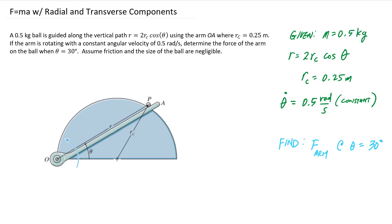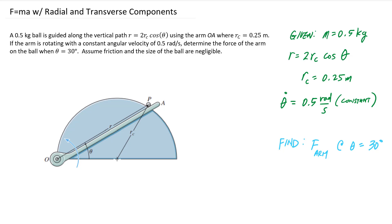We're told that theta-dot, the angular velocity, is 0.5 radians per second and is constant. One thing we want to recognize is that if our angular velocity is constant, then our angular acceleration theta-double-dot is zero.